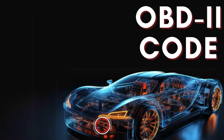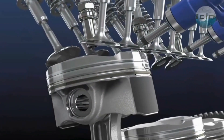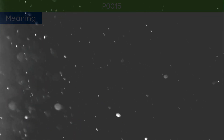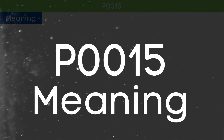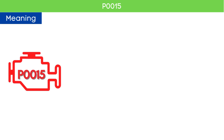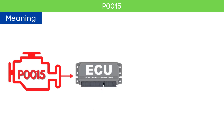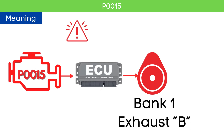Hey there! In this video, we're diving into everything you need to know about OBD-II trouble code P0015. First, let's understand what the P0015 code is. The P0015 code indicates that the ECM has detected that the camshaft timing for bank 1, specifically the exhaust camshaft, is over-retarded.